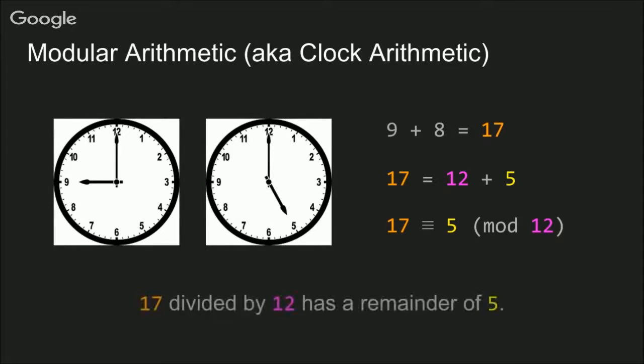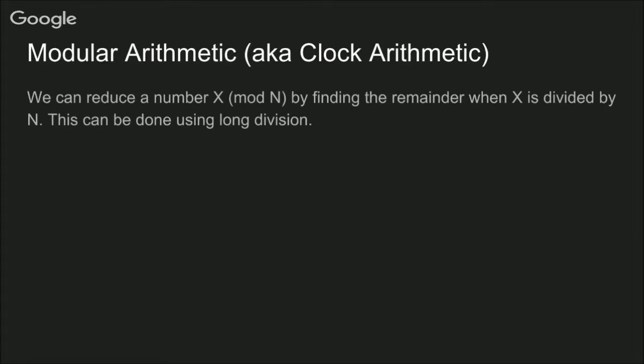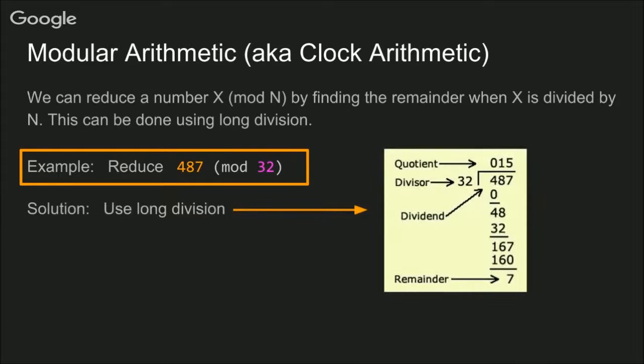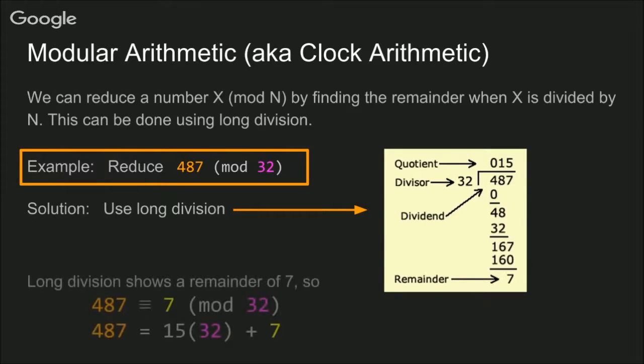The nice thing is we can easily calculate these congruences because when 17 is divided by 12, the remainder is 5. We can generalize this idea for clocks with any number of hours, say n. We reduce the number x mod n by finding the remainder when x is divided by n. And here's an example problem. Reduce 487 mod 32. To solve this problem, we can just use long division. And here's the work. Since the remainder is 7, we know that 487 is congruent to 7 mod 32.